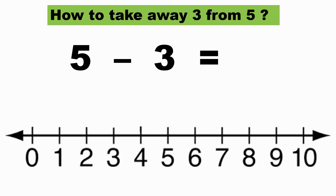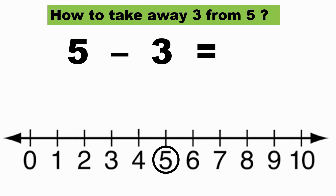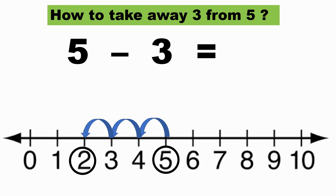First I take the number five and find where five is on the number line. I need to take away or subtract three from five, so I need to hop three places to the left. One time, two times, three times — I hop three times to the left from five and I come to two. So five minus three gives me two.